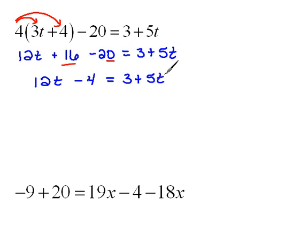Now we're at the same stage. These problems continue to look very similar. We need to get our t's together. So I'm going to move this 5t over to the left by doing the opposite, subtracting 5t from both sides, which will leave us with 7t minus 4 equals 3.